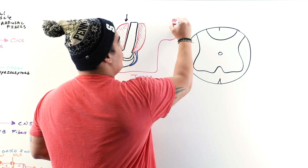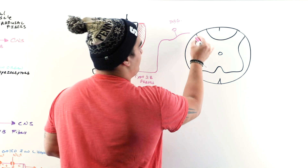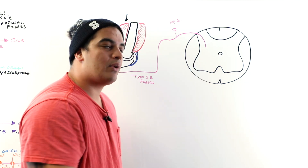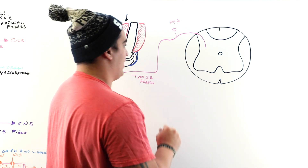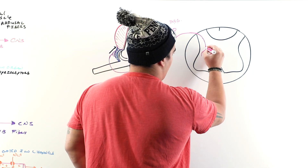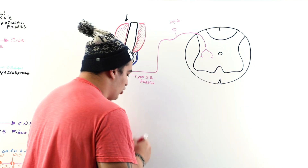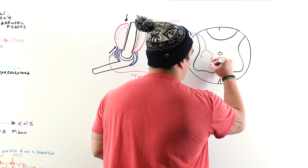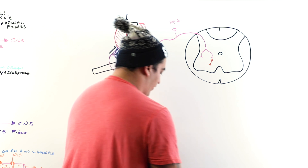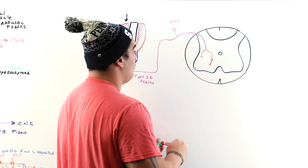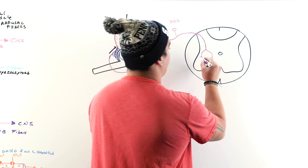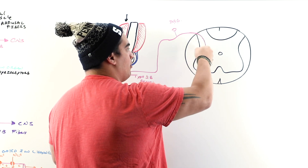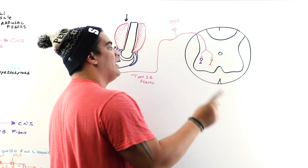Those type 1b signals travel to the dorsal root ganglia, then move into the posterior gray horn. Here, the fiber bifurcates — it splits and synapses on two types of interneurons. One is an inhibitory interneuron and the other is a stimulatory interneuron.